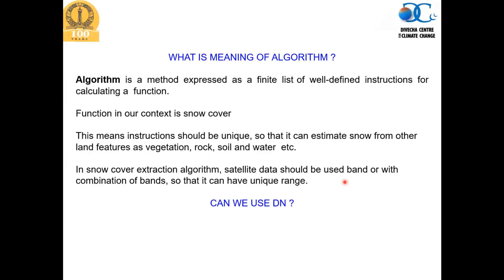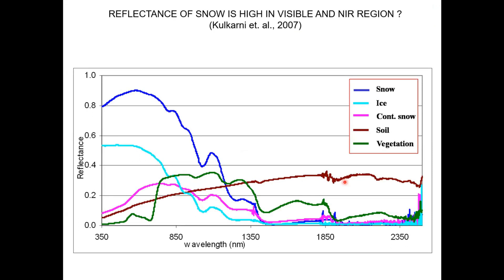In satellite remote sensing, you should use a band or combination of bands to estimate snow. Many of you who have worked on raw satellite data know that raw satellite data is nothing but digital numbers. The question to ask yourself is: can we use the digital number to do further analysis? We will explore that issue a little bit later.